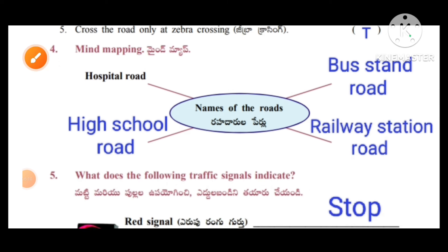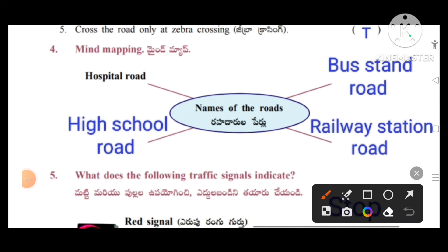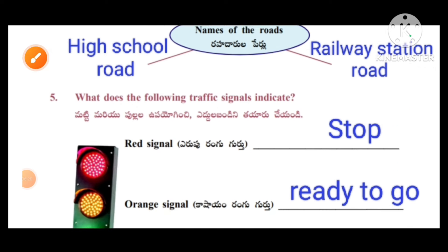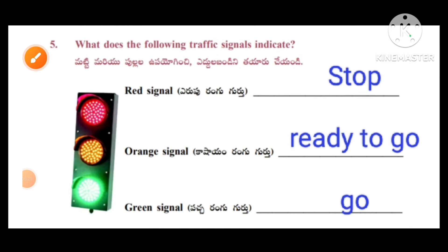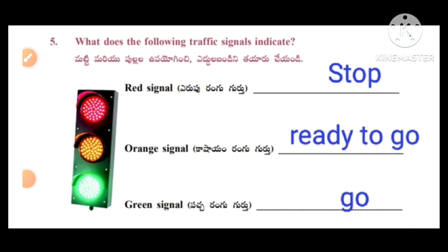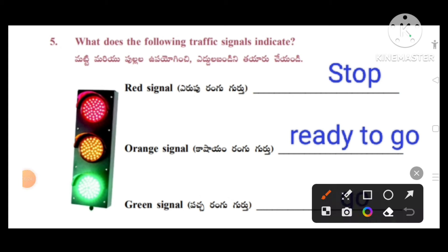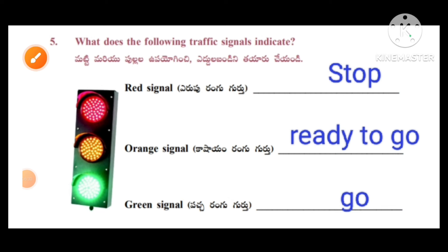Mind map: names of the roads. One is already given — that is hospital road. High school road, bus stand road, railway station road. What do the following traffic signals indicate? Red signal indicates stop. Orange signal indicates ready to go. Green signal indicates to go.